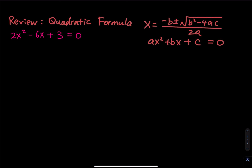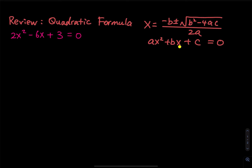Let's review the quadratic formula. The quadratic formula is x equals negative b plus or minus the square root of b squared minus 4ac, divided by 2a. This is for solving a quadratic equation, which is ax squared plus bx plus c equals zero.